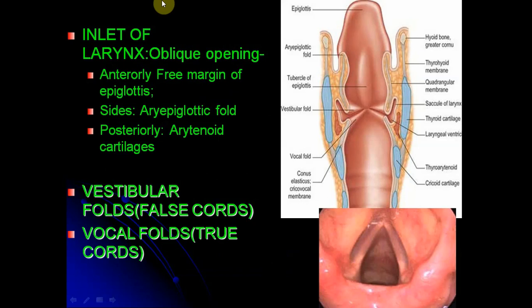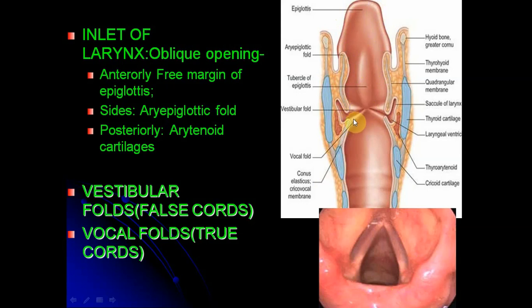The laryngeal cavity extends from the inlet to the lower border of the cricoid cartilage. The inlet is an oblique opening bounded anteriorly by the free margin of the epiglottis, laterally by the aryepiglottic folds, and posteriorly by the arytenoid cartilage. Within the cavity of the larynx, two prominent folds are seen: vestibular folds and the vocal folds.